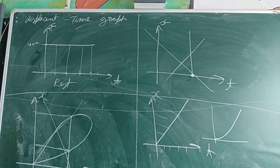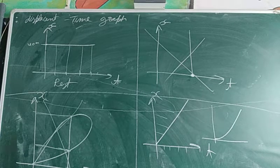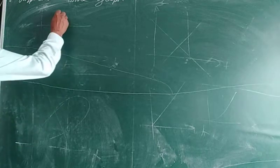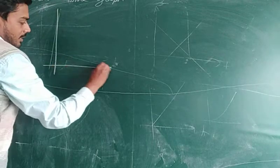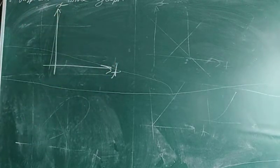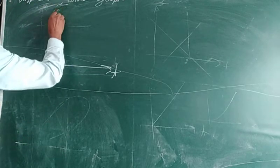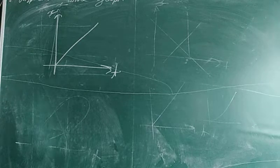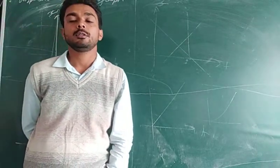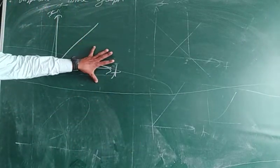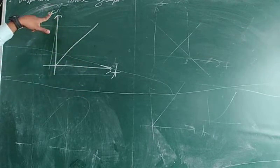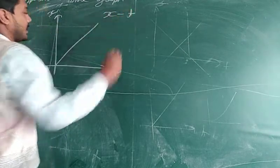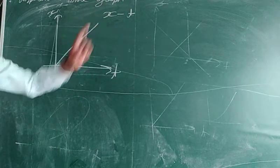Now let us discuss how to perform calculations using the graph. Suppose we have a graph with time on the x-axis and displacement on the y-axis. To perform any calculation, first identify the two variables the graph is drawn between. Here, one variable is displacement and the other is time.